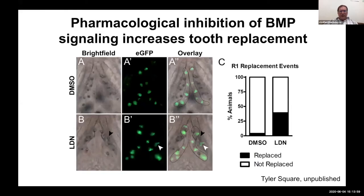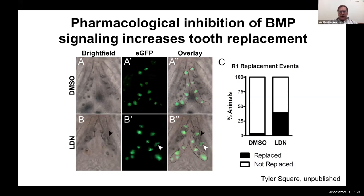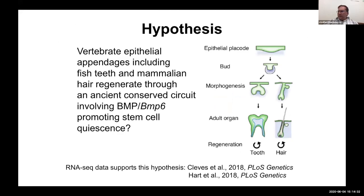More recently, postdoc Tyler Square replicated this result using a TCF-LEF Wnt reporter line where cells receiving Wnt signaling express GFP. Looking at early tooth fields and asking whether the first replacement event identified by Nick is affected by LDN signaling, he also found that the replacement event is sped up. We're excited by that because it suggests BMP signaling inhibits tooth regeneration, just like hair regeneration. Published RNA-seq data also supports the idea of parallels between hair and tooth regeneration.